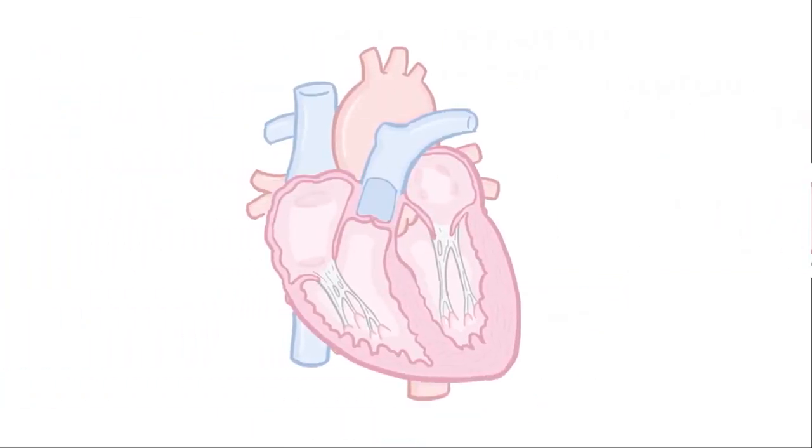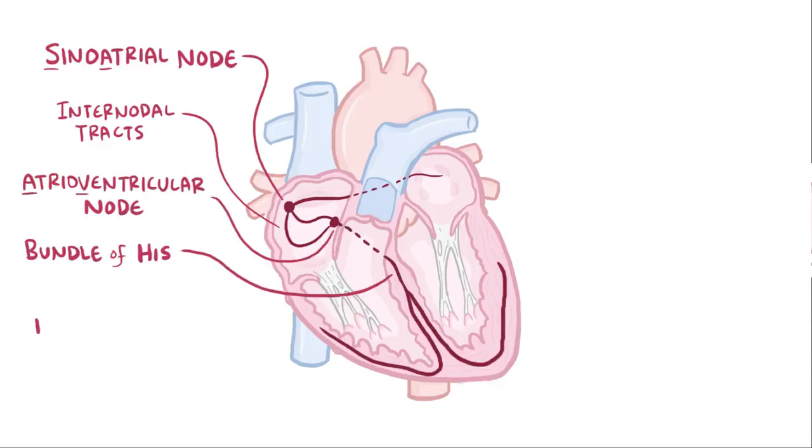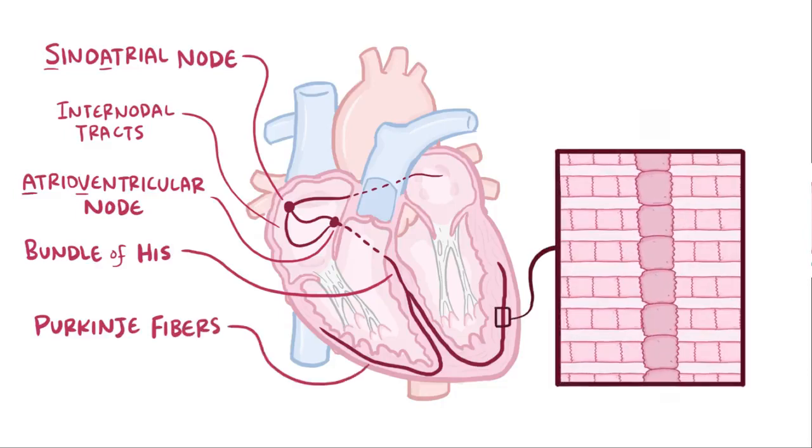So let's start out by mapping these pacemaker cells. The first clump of pacemaker cells is tucked up here in the corner of the right atrium, and it's called the sinoatrial node, which is sometimes just called the SA node. We've also got pacemaker cells in the internodal tracts between the nodes, as well as in the atrioventricular or AV node, the bundle of His, and the Purkinje fibers, and together this is called our electrical conduction system.